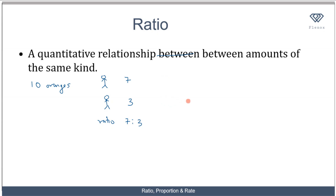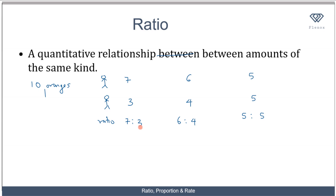Or you can say I want to give my sibling 4, while I'll take 6. So in this case, the ratio will be 6 ratio 4. Or you can decide to share it equally — you take 5 and take 5, that is 5 ratio 5. So what does this tell us? It tells us that in this first instance, for every 7 I take, my sibling is going to take 3.